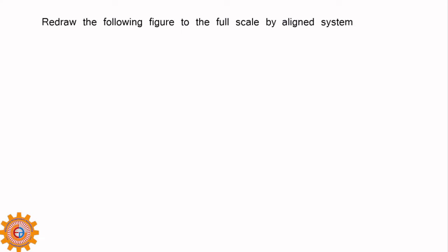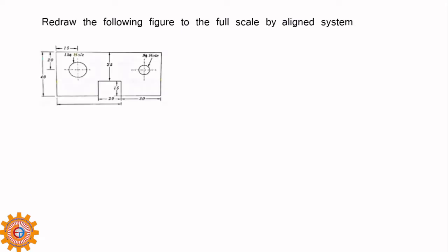Next problem: redraw the following figure to full scale using the aligned system. If you observe clearly, everything in the original is inside the view. The dimension 15 is inside, this is inside, this is inside. Moreover, this dimension has used the figure side as an extension line — here also 15 has used the body as extension line, which is not allowed. The dimension line is very narrow and small, so it should be placed far away — around 6 to 8 mm.